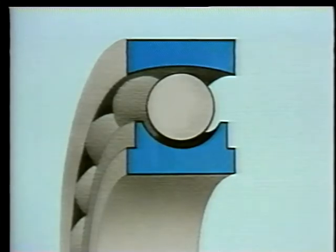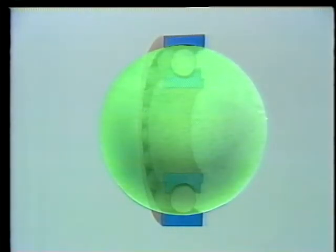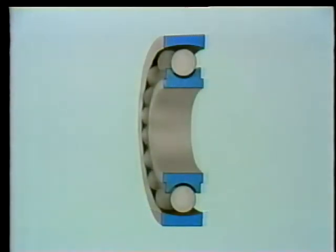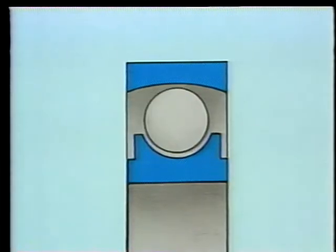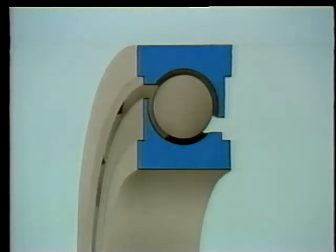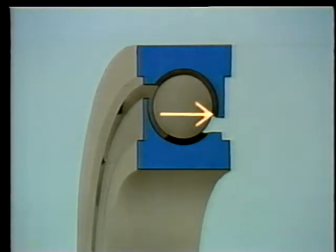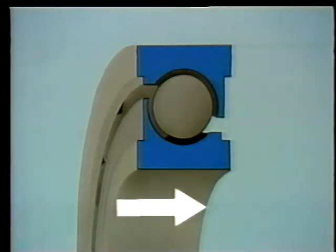A spherical race ball bearing is a variation of the Conrad bearing. The inner ring has a deep groove, but the outer ring's race is shaped like a section of a sphere. This allows the bearing to handle much more misalignment — when one ring is out of line with the other. When larger axial loads are expected, an angular contact bearing is often used. This type has a high shoulder on one side of the inner race and a high shoulder on the opposite side of the outer race, allowing it to handle both axial and radial loads.